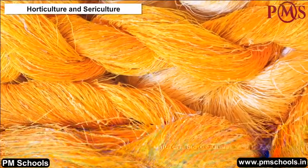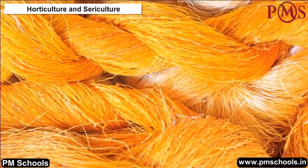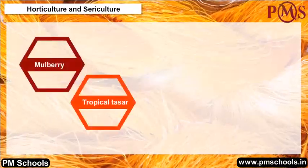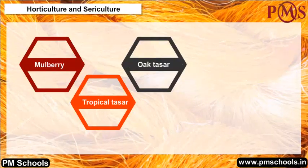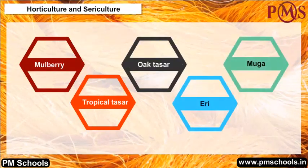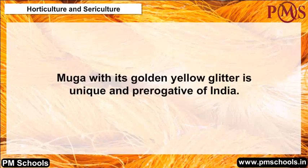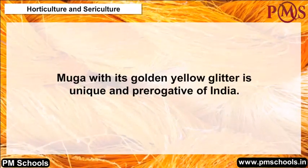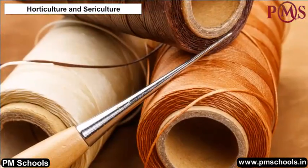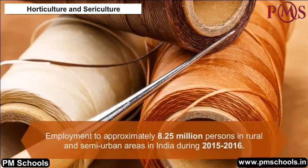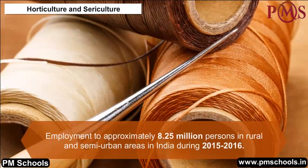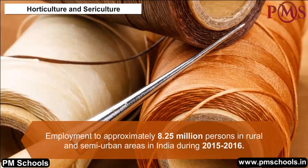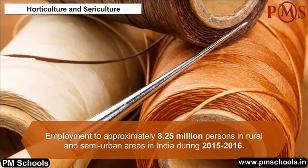India produces all five known silk varieties, being the only country in the world to do so: Mulberry, Tropical Tassa, Oak Tassa, Arai, and Muga — of which Muga with its golden yellow glitter is unique and prerogative of India. The sericulture industry provides employment to approximately 8.25 million persons in rural and semi-urban areas in India during 2015–2016.